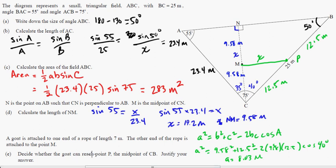Now what they ask is, decide whether the goat can reach point P, the midpoint. Well, no, it can't, because if the goat's going 7 meters, like right here, that's the goat right there. If I knew how to draw, I'd put a little goat there. That's 7 meters. The whole thing's 8.03. So decide whether it can reach point P. Well, no, it cannot. It can't, because 7 is less than 8.03.